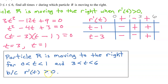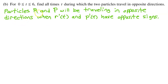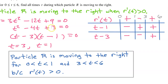Make sure you include that justification. Part B: For the closed interval from 0 to 6, find all times t during which the two particles travel in opposite directions. Particles r and p will be traveling in opposite directions when their velocities r prime and p prime have opposite signs. We already know where r prime is positive and negative, so let's find p prime.